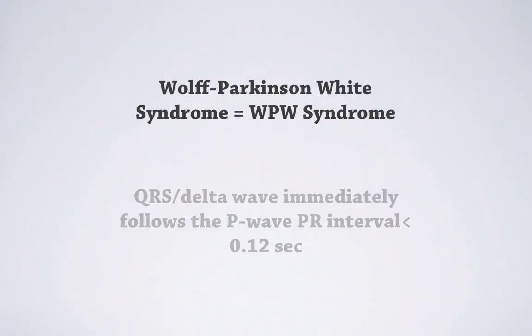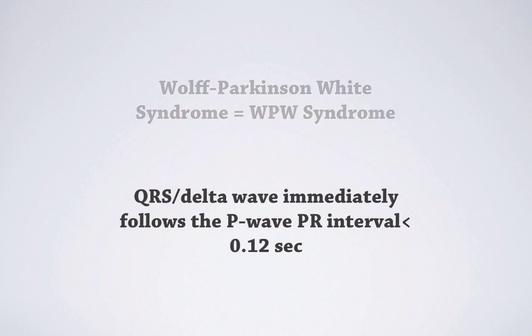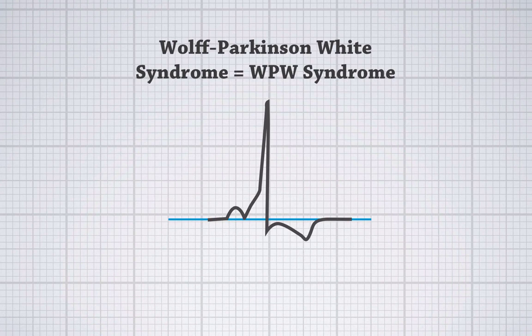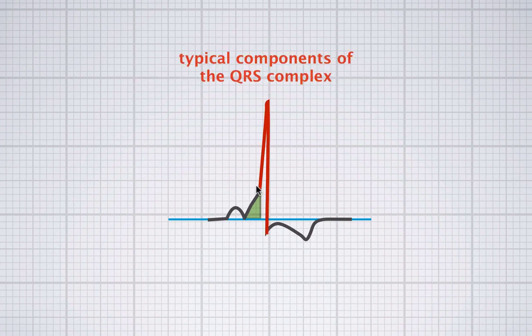The second entity that causes a shortening of the PR interval is the so-called Wolff-Parkinson-White syndrome, or WPW syndrome. Here the QRS or delta wave immediately follows the P wave and the PR interval is below 0.12 seconds. We have a P wave and then immediately the QRS complex starts, but with this strange feature called a delta wave — named because it resembles the Greek letter delta. The regular components of the QRS complex follow after the delta wave.